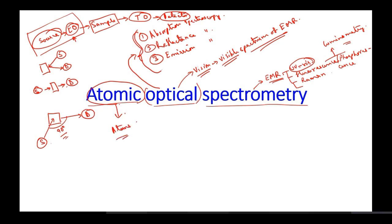In both UV visible and fluorescence spectroscopy, we were talking about electronic transitions where electrons were moving from the ground state level to the virtual excited state level and coming back. In Raman spectroscopy, we saw that there was scattering of light.